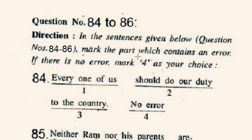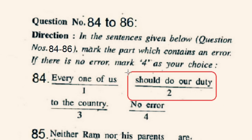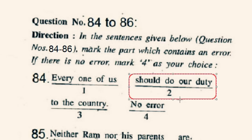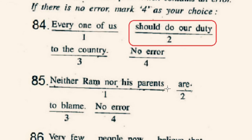Questions 84 to 86: Mark the part which contains an error; if no error, mark 4. Question 84: 'Every one of us should do our duty to the country' — the part that contains an error is the 2nd part; there should be 'his' in place of 'our.' Question 85: 'Neither Ram nor his parents are to blame' — the correct option is 4th, no error. Question 86: 'Very few people now believe that the wages of sin are death' — part 3rd contains an error, as the noun wages is singular.